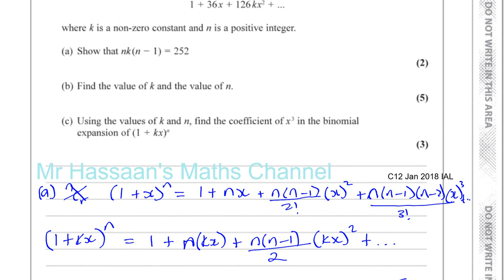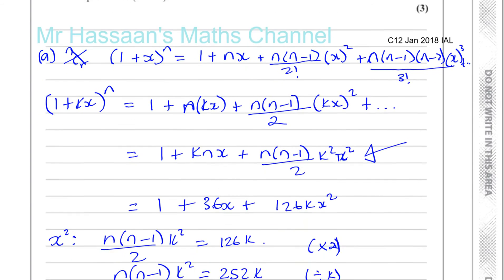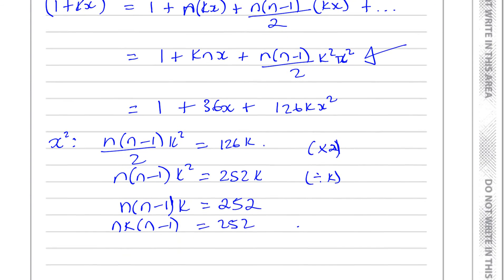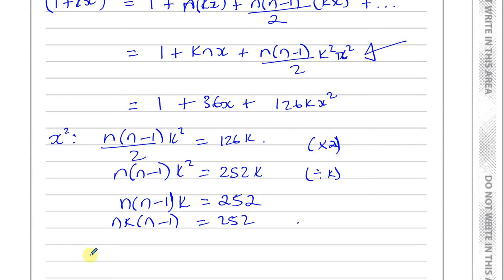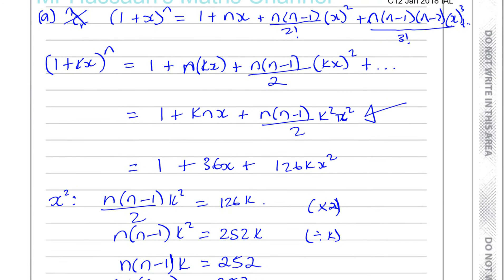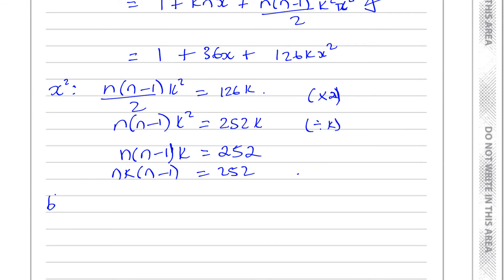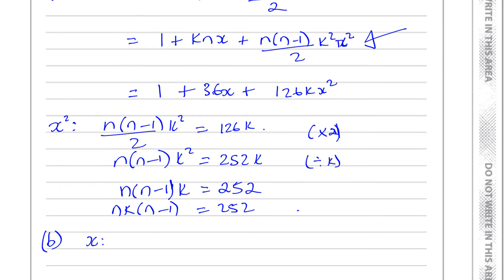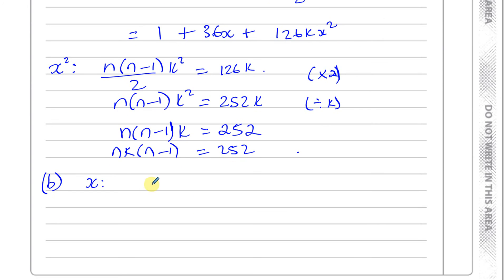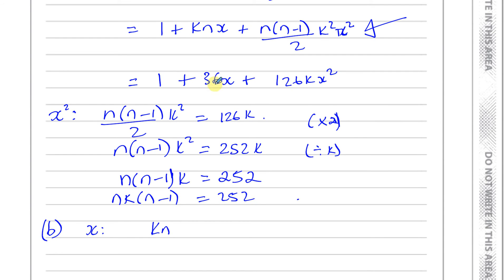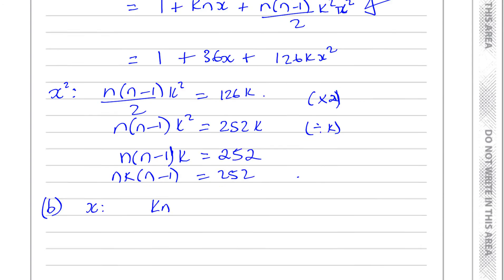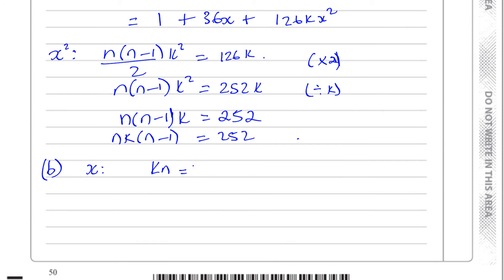Then it says, find the value of k and the value of n. Now, what we can do is, we can use the fact that, so this is part a finished, now part b, we can use the coefficient of x in both of them. The coefficient of x in the first one is kn. So, we can say kn, and in the second one, the coefficient of x is 36. kn must equal 36, that means.